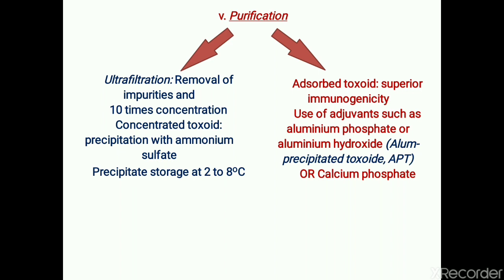The second way of purification is treatment with adsorbents, known as adsorbed toxoid. This preparation has the advantage of superior immunogenicity. Adjuvants such as aluminum phosphate or aluminum hydroxide are used, and this type of preparation is called APT — alum precipitate toxoid. Sometimes calcium phosphate may also be used.